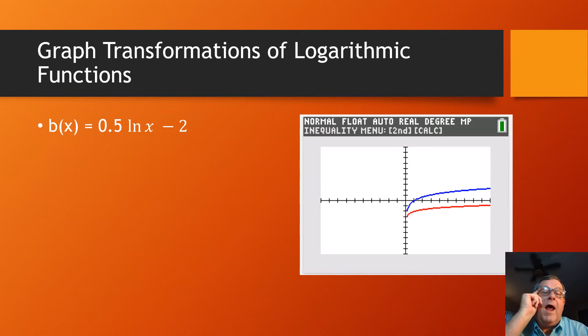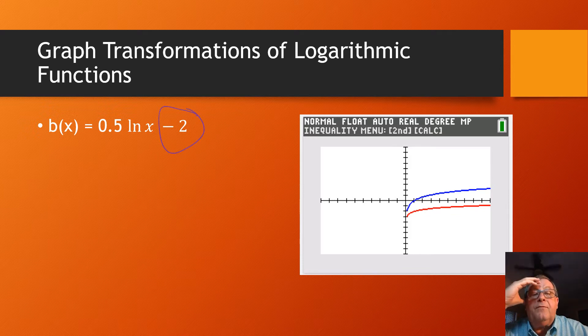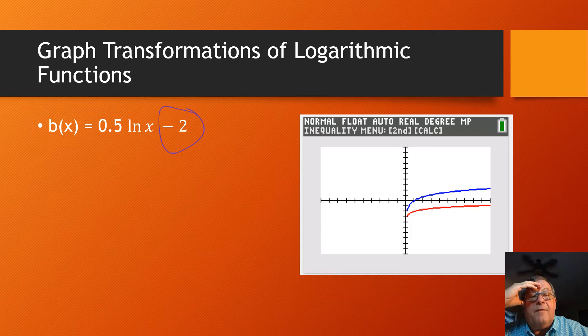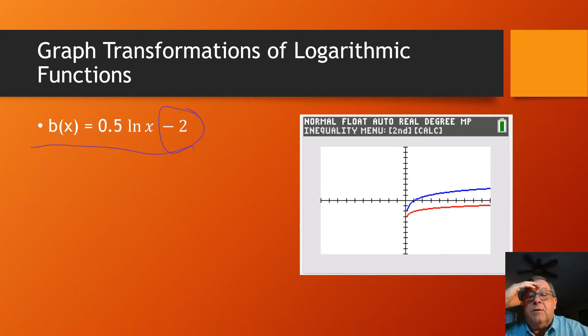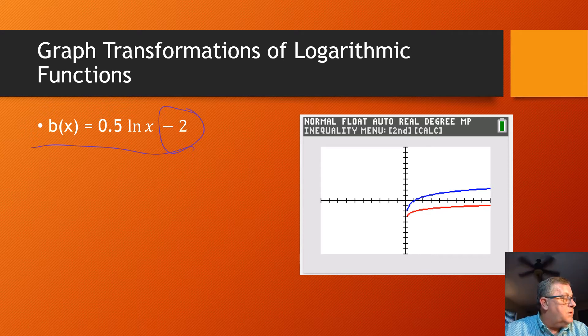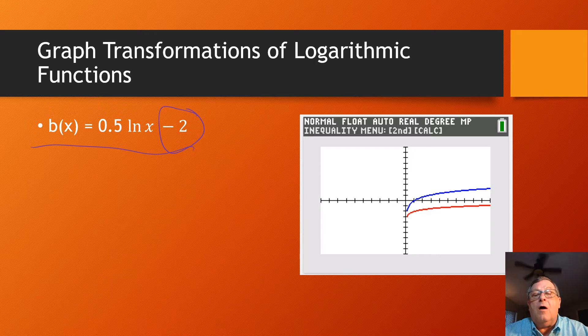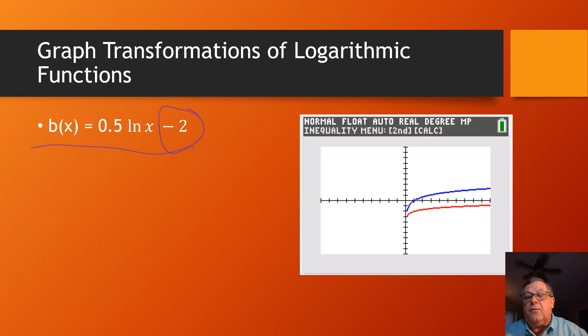Now we've got the one half or 0.5 ln of x minus 2. That negative 2, taking us to a vertical shift down 2. And again, the red graph is this transform function. The blue is the parent. So I see a vertical shift down 2. And then I see it's compressed. It's pushed down vertically by that factor of 5 along with the vertical shift down of 2.